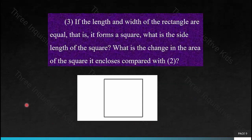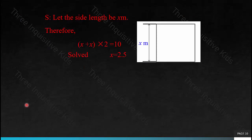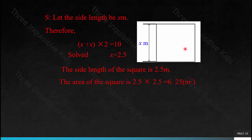If the length and width of the rectangle are equal, it now forms a square. What would be the side length of the square? There are four sides, each the same length, and they add up to 10 meters. So we divide 10 by 4, or set up x × 4 = 10. Solved: one side length would be 2.5 meters. Therefore, the side length of the square is 2.5 meters. If you square that, you get 6.25 meters squared, which would be the area. Its area increases from the last rectangle by 0.16 meters squared.